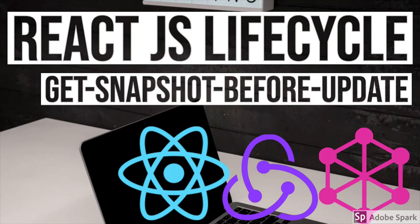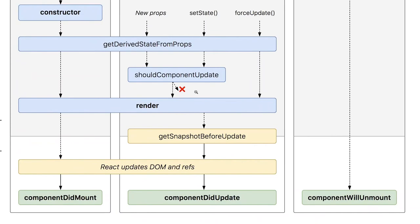Hi everyone and welcome back. In the set of all these different lifecycle methods, getSnapshotBeforeUpdate is a little tricky. Apart from that, we have already covered all the different lifecycle methods — those are kind of simple. shouldComponentUpdate and getDerivedStateFromProps we are able to understand. Now getSnapshotBeforeUpdate is actually working in conjunction with componentDidUpdate, and it is working just after render.